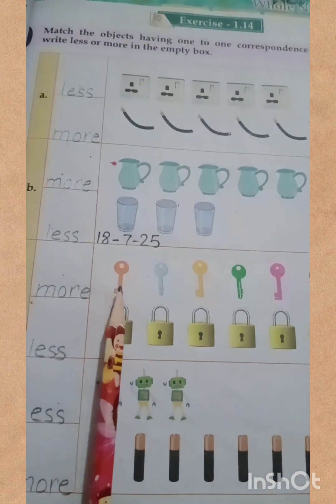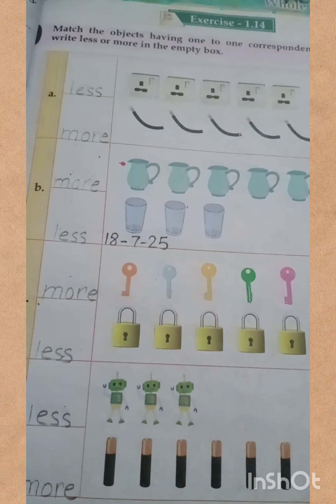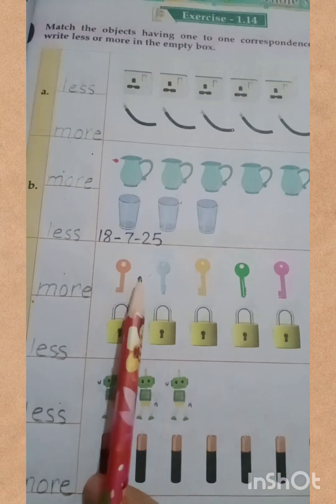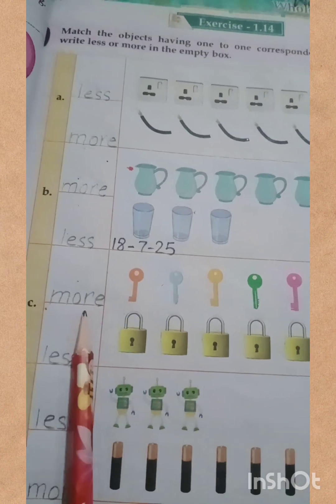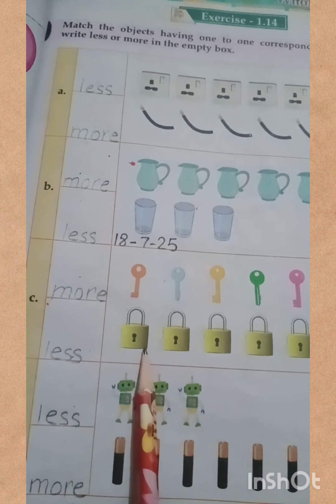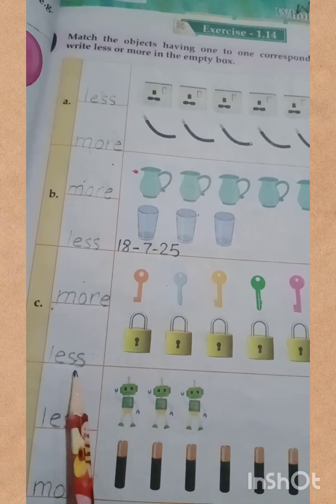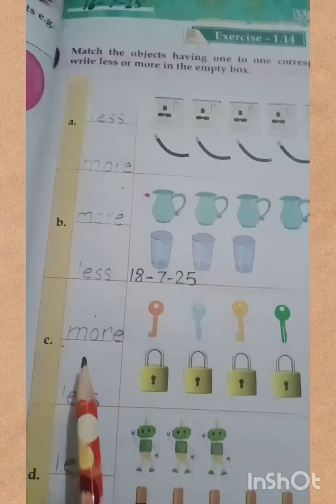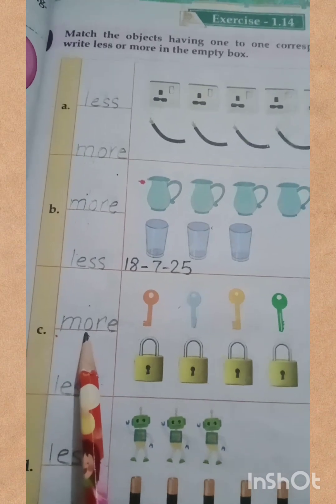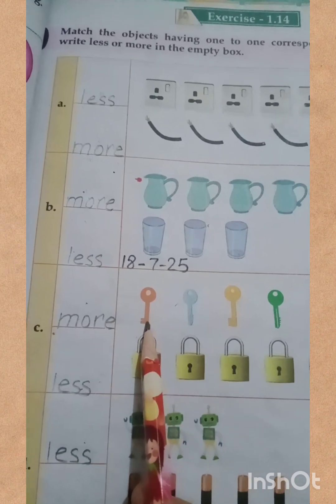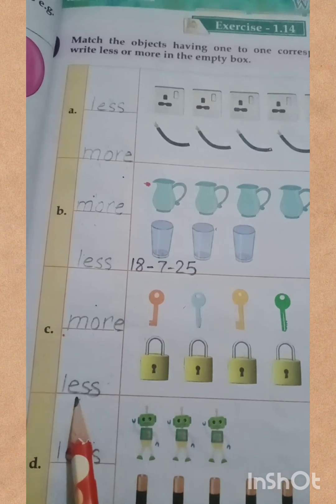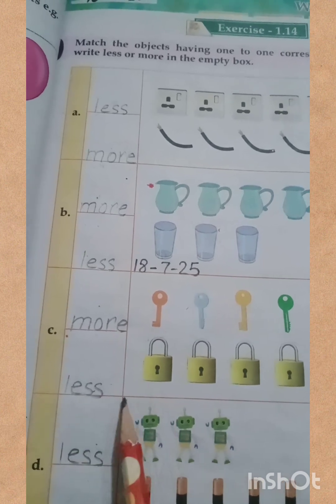We will compare the keys with the locks. The keys are more and the locks are less. We will write 'more' above the keys and we will write 'less' above the locks.